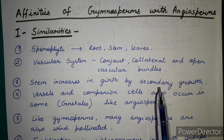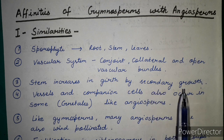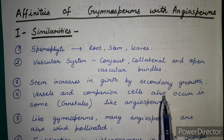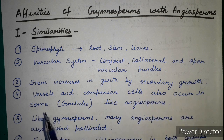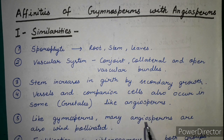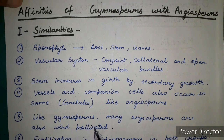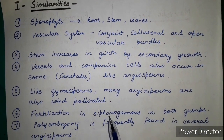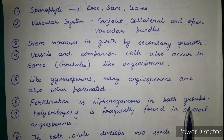Vessels and companion cells also occur in some gymnosperms, like Ephedra (Gnetales), and in angiosperms they are present. Like gymnosperms, many angiosperms are also wind-pollinated. Fertilization is siphonogamous in both groups.